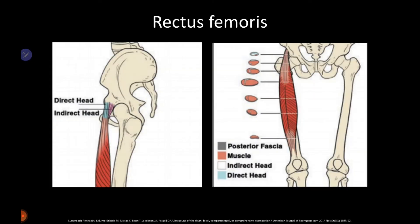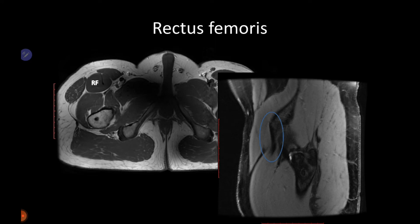Rectus femoris has two heads: direct and indirect. On the cross section of the muscle we can see a small tendon inside, which is the indirect head, and a superficial tendon arising from the direct head. On the axial and sagittal MR images we can see a small tendon inside the muscle and its origin from the anterior inferior iliac spine.